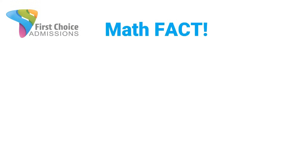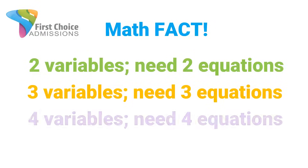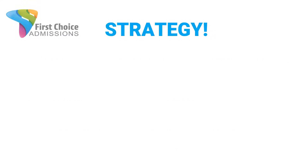From that comes an incredibly useful math fact that appears all over the test: if you have two variables, you must have two equations in order to solve for an exact value. If you have three variables, you need three equations; four variables, you need four equations — and so on. Because that math fact is true, you now have an incredibly powerful and simple strategy.